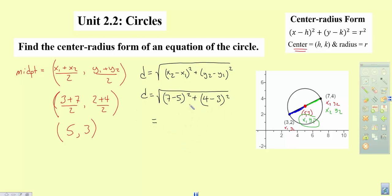You can pull out your calculator and do it at this point, you can do it by hand, but basically 7 minus 5 is 2, so 2 squared is 4, 4 minus 3 is 1, 1 squared is 1. So what we find out is our distance, which is actually equal to our radius.